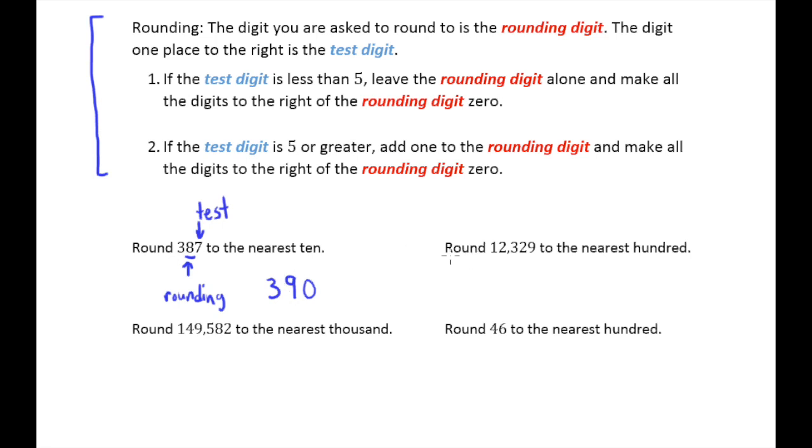Let's take a look at this example. It says 12,329. We want to round that to the nearest hundred. So there's my rounding digit. Two is my test digit.